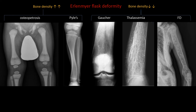Fibrous dysplasia can be monostotic or polyostotic. In polyostotic cases it is more aggressive and usually affects one side of the body. We can see diffuse lytic lesions with classic ground-glass matrix extending along the length of the affected bone. The bone is expanded with no soft tissue mass and no periosteal reaction.